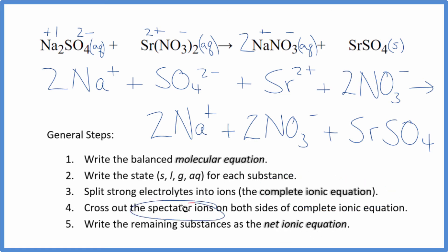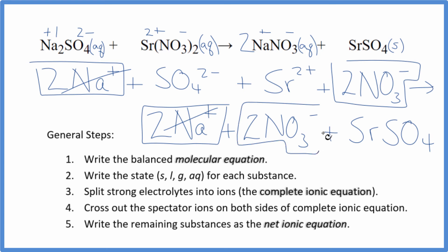Now we can cross out spectator ions. They're on both sides. So when I look at the reactants here, and I look at the products, I see I have 2 sodium ions in the reactants and in the products. So, cross it out. I have 2 nitrate ions here in the reactants and in the products. Get rid of that. What's left, that's the net ionic equation for sodium sulfate plus strontium nitrate. I'll clean this up, write the states in, we'll have our net ionic equation.